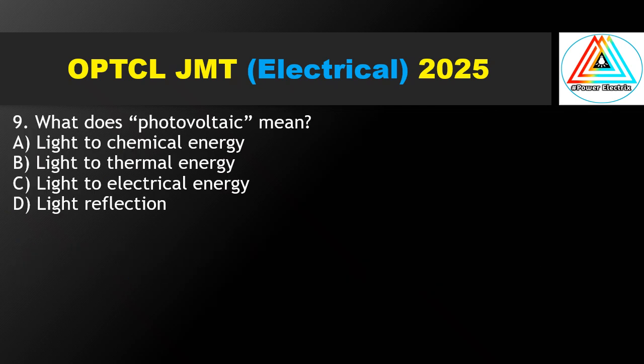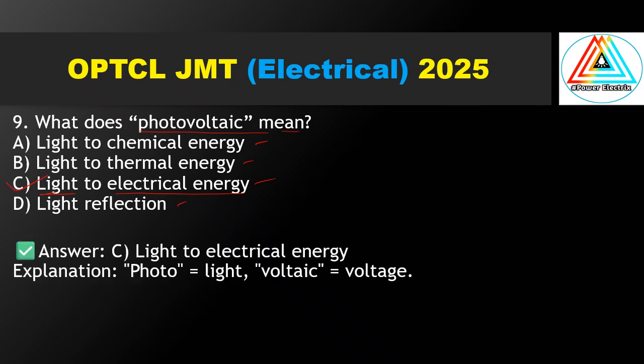Question No. 9: What does photovoltaic mean — light to chemical energy, light to thermal energy, light to electrical energy, or light reflection? Option C is correct: light to electrical energy. Photo means light and voltaic refers to voltage.